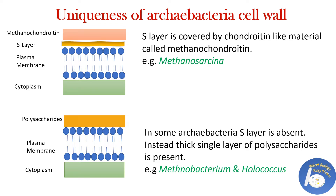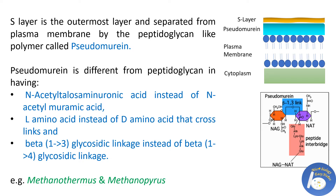In some archaebacteria the S-layer is absent; instead a thick single layer of polysaccharides is present — examples are Methanobacterium and Halococcus. In some archaebacteria the S-layer is the outermost layer, separated from the plasma membrane by a peptidoglycan-like polymer called pseudomurein. Pseudomurein differs from peptidoglycan in having N-acetyl-talosaminuronic acid instead of N-acetylmuramic acid, L-amino acids instead of D-amino acids, and beta-1,3 glycosidic linkage instead of beta-1,4 glycosidic linkage.